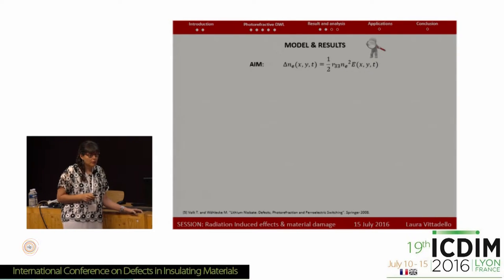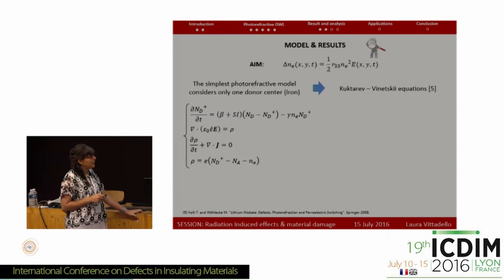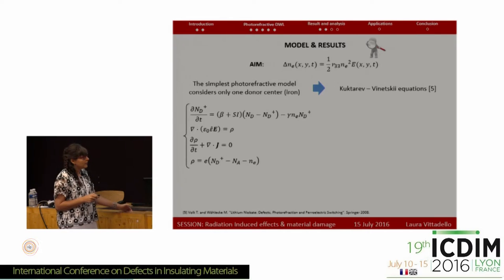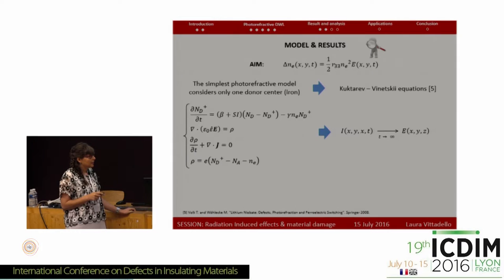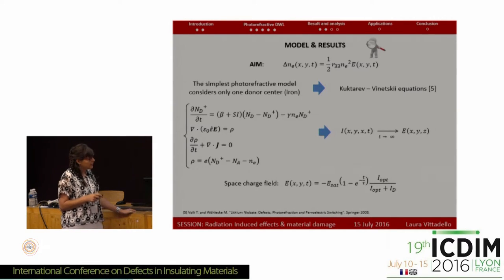The second part of the work was devoted to modeling these structures. In particular, we want to understand delta n, and to do this we need to know the internal electric space-charge field. We assume the simple photorefractive model, which considers only one donor center — in our case, iron. The model is based on the Kukhtarev-Vinetsky equations. To solve this system, it's necessary to model properly the shape of the laser beam intensity profile. After this, it's possible to solve the system analytically to determine the space-charge field.